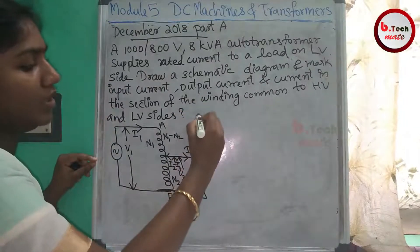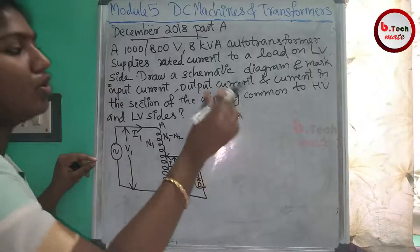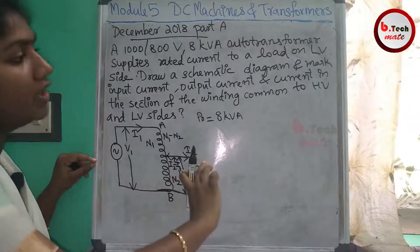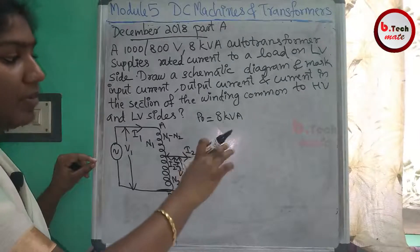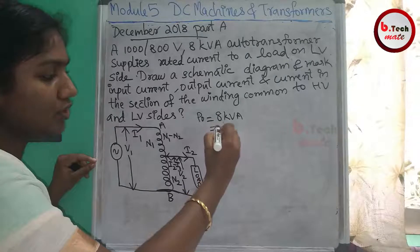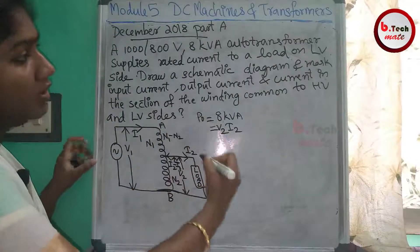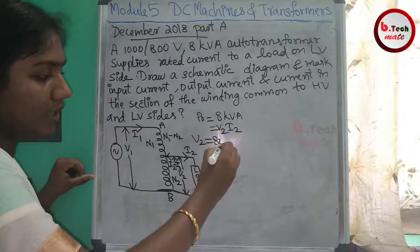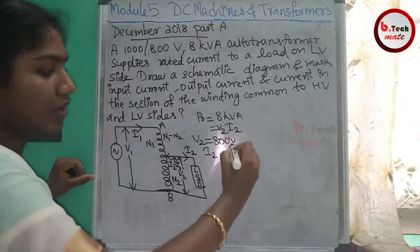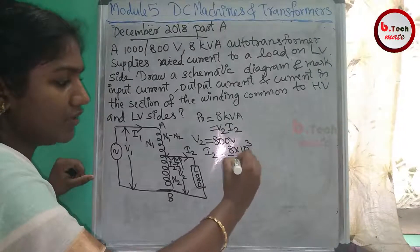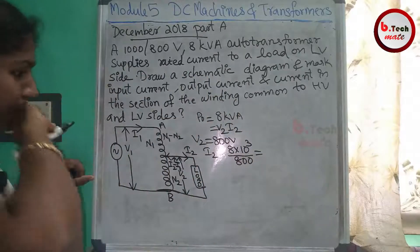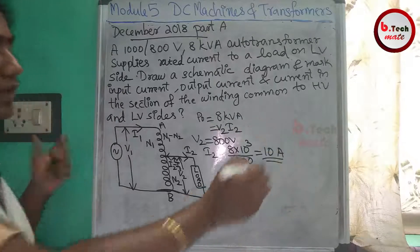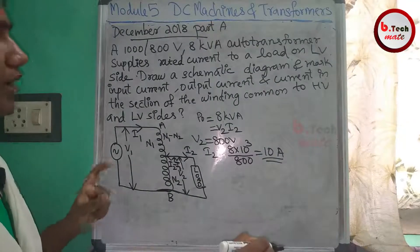The output power is 8 kVA on the load side, so the auto transformer will be loaded on the LV side. Therefore, it will be 8 kVA = V2 × I2. V2 is the LV side voltage, which equals 800V. So I2 = 8000 divided by 800V, which gives us 10A.